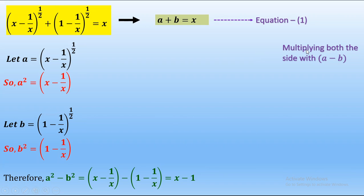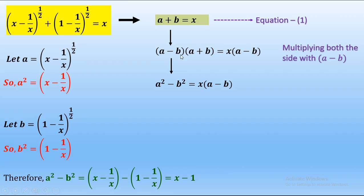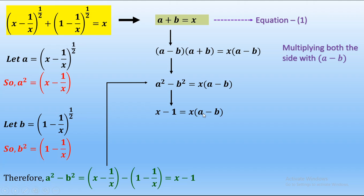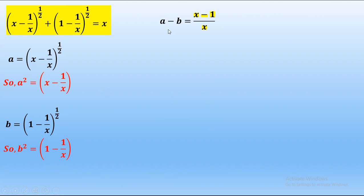We will multiply (a minus b) on both sides. So we obtain (a minus b)(a plus b) = x times (a minus b). This is the formula for a² minus b². We write a² minus b² in place of that, and its value is x minus 1. So x minus 1 = x times (a minus b). Bringing all x terms to one side we obtain (x minus 1)/x = a minus b.